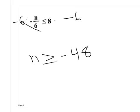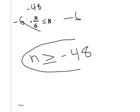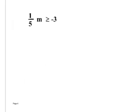Now I can check to see if this is true. Negative 48 divided by negative six — what is that equal to? Eight. Is eight less than or equal to eight? Yes. So this is true, and that's why we had to change our sign. If I had written N is less than or equal to negative 48, it would not have worked. That's why you have to change your sign.